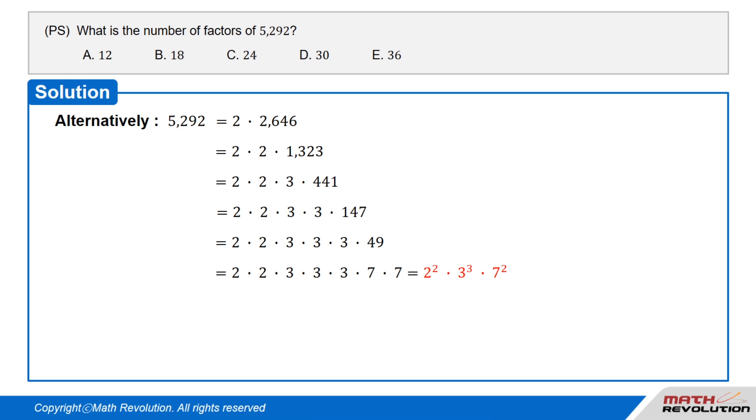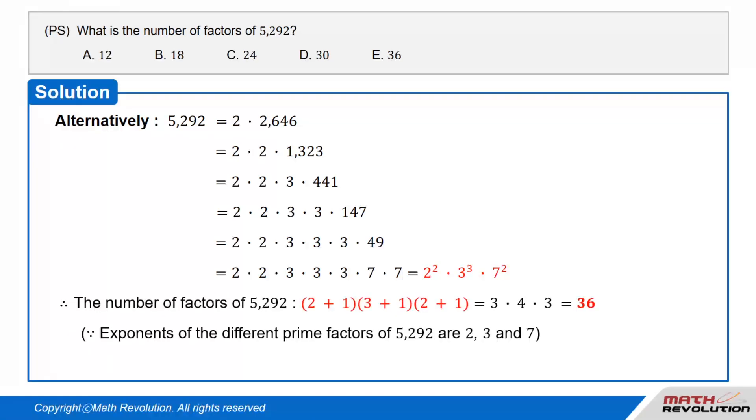These factorizations require a lot of practice. Thus, the number of factors of 5,292 will be 2 plus 1 times 3 plus 1 times 2 plus 1 equals 3 times 4 times 3 equals 36, as the exponents of the different prime factors of 5,292 are 2, 3, and 7, respectively.